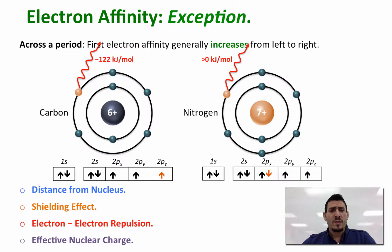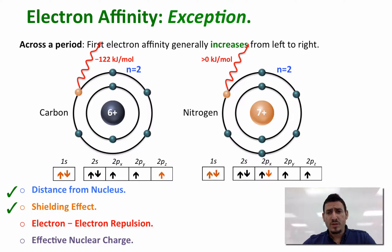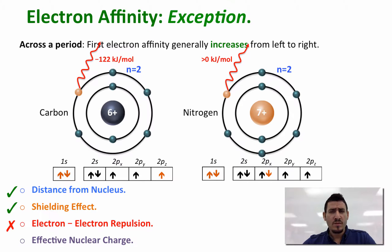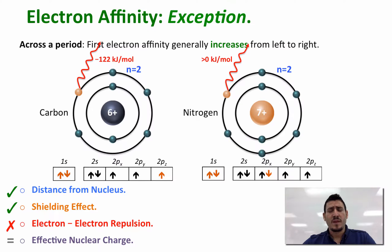Notice that the electron is added to the same energy level for both carbon and nitrogen, so they are at the same distance from the nucleus. The shielding effect is also the same since both are shielded by two inner electrons. What plays the major role here is electron-electron repulsion: the electron added to carbon goes into an empty orbital, whereas the electron added to nitrogen goes into a half-filled orbital, resulting in much greater electron-electron repulsion. The effective nuclear charge is not playing a major role in this case.